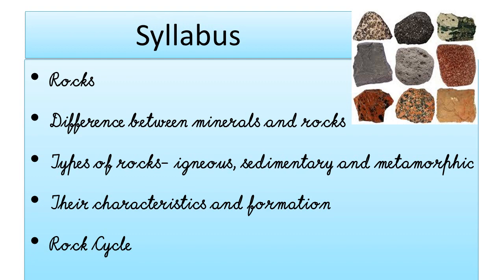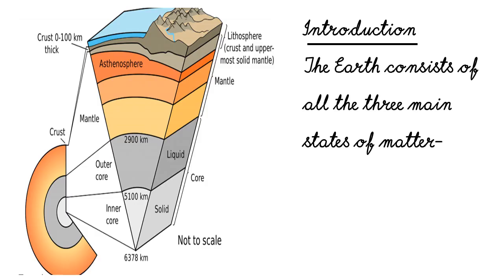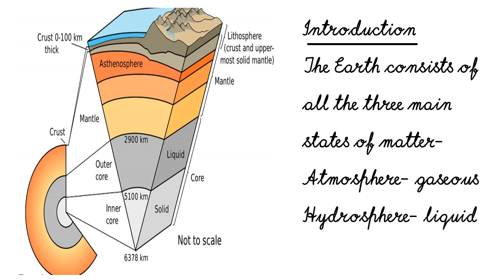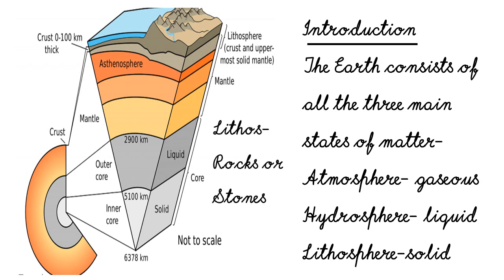And finally we'll discuss about the rock cycle. So let's get started. Our planet Earth consists of all the three main states of matter: atmosphere in gaseous form, hydrosphere in liquid form, and lithosphere in solid state. Litho in Latin means rock or stones, thus lithosphere can even be called as rock sphere.